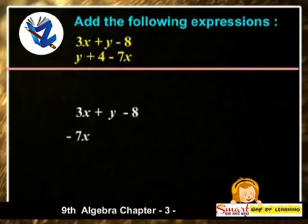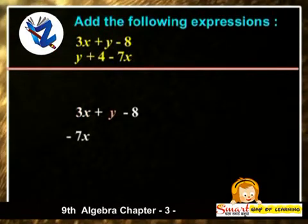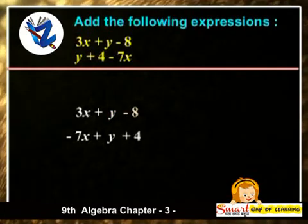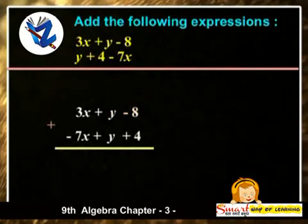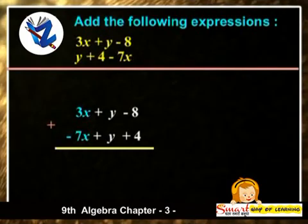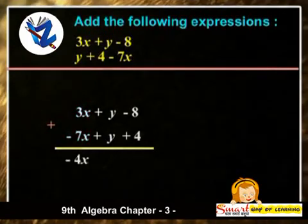So, minus 7x is written below 3x, y is written below y and 4 is written below minus 8. The addition of 3x and minus 7x is minus 4x.